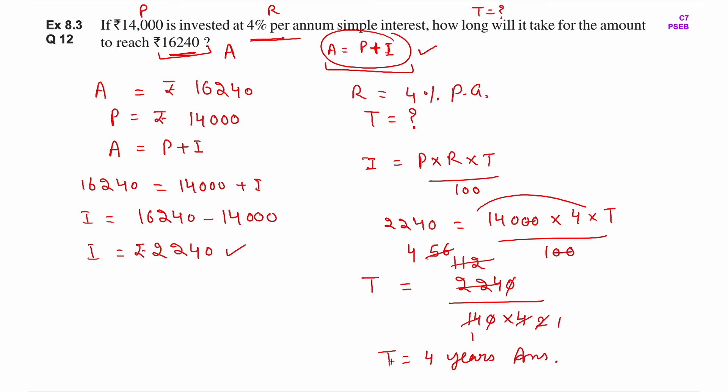This is the answer. You found the T value by putting it in the interest formula. The T value from the interest formula is always in years. So this will be 4 years.